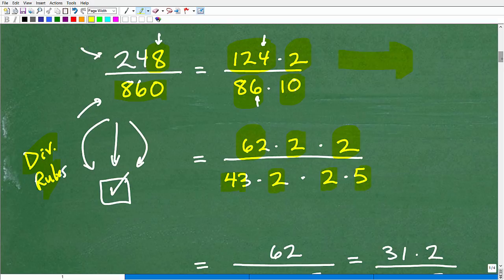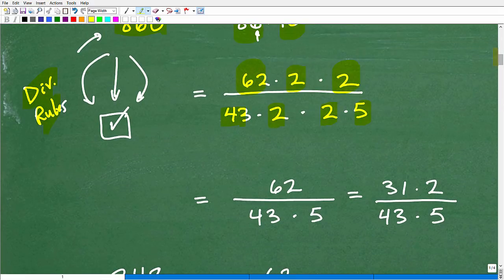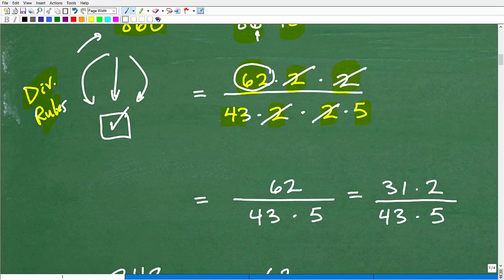So just kind of breaking things up. And at this point, I think this is a good opportunity right here to go in and start cross-canceling. Because I see a lot of 2s. So there's no reason for us to continue to kind of carry these 2s right now. We can kind of get rid of them. So this 2 can cross-cancel that 2. And then this 2 can cross-cancel that 2. So now I'm just left with 62 in the numerator, 43 and 5 in the denominator. Okay, perfect.